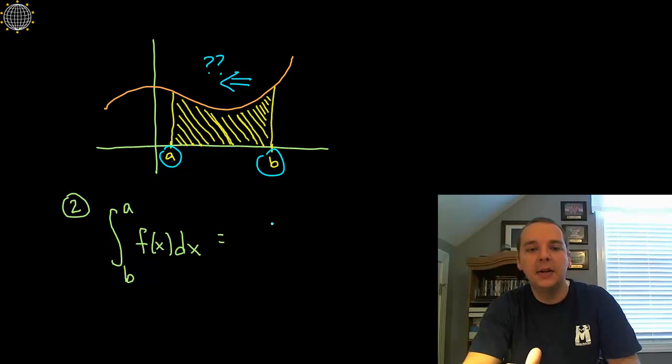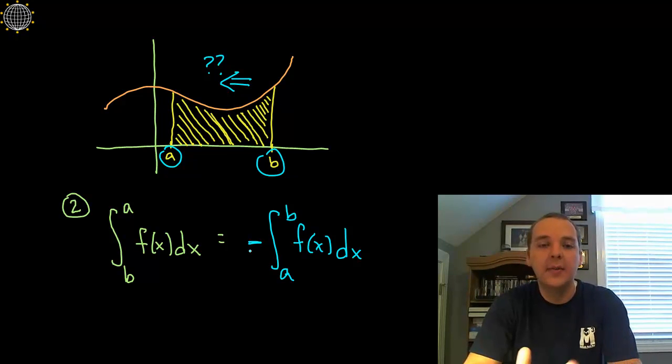If you integrated from B back to A, from the higher number back to the lower number, it turns out that this is very close to the integral from A to B of f(x)dx, but not quite. It turns out to be the negative of whatever that quantity is. Now you might look at that and say, well Devin, how is that the case? Because area is area, right? If you integrate from 2 to 7 and 7 to 2, shouldn't the answers be the same?